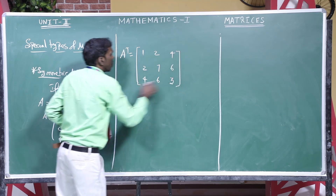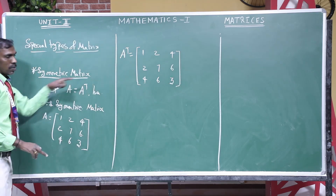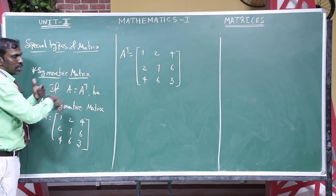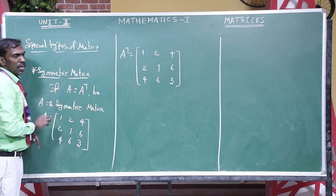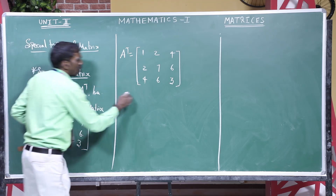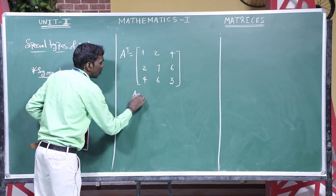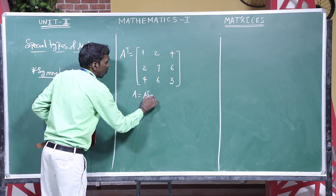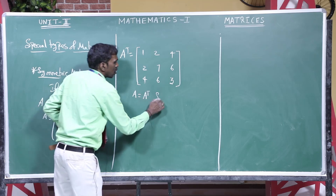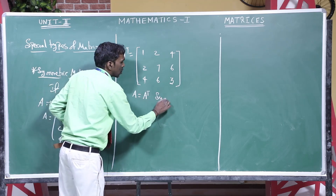See, both matrices are the same. If I am transposing the element, I again get the A matrix. This is called A equals A transpose, so this is called a symmetric matrix.